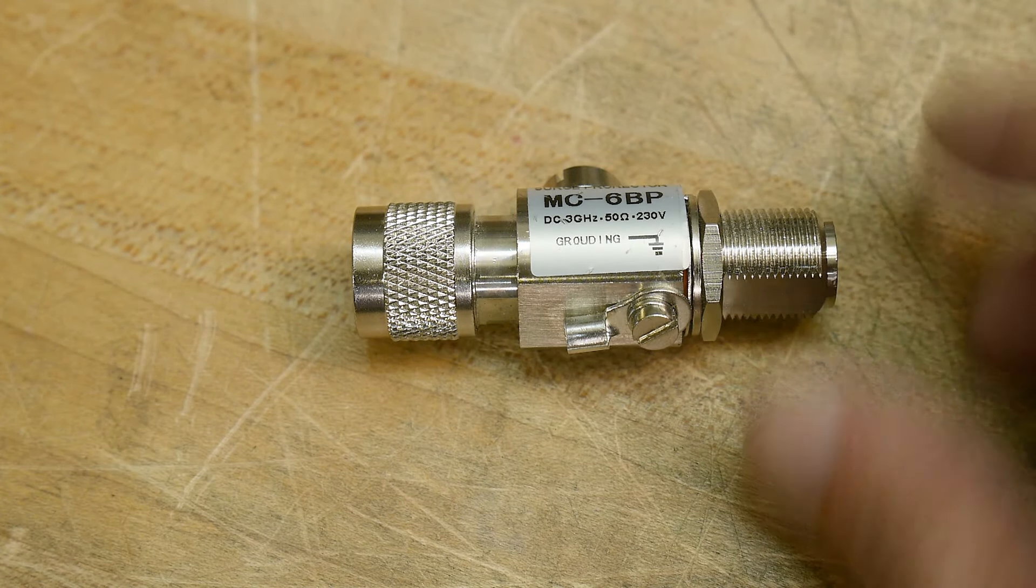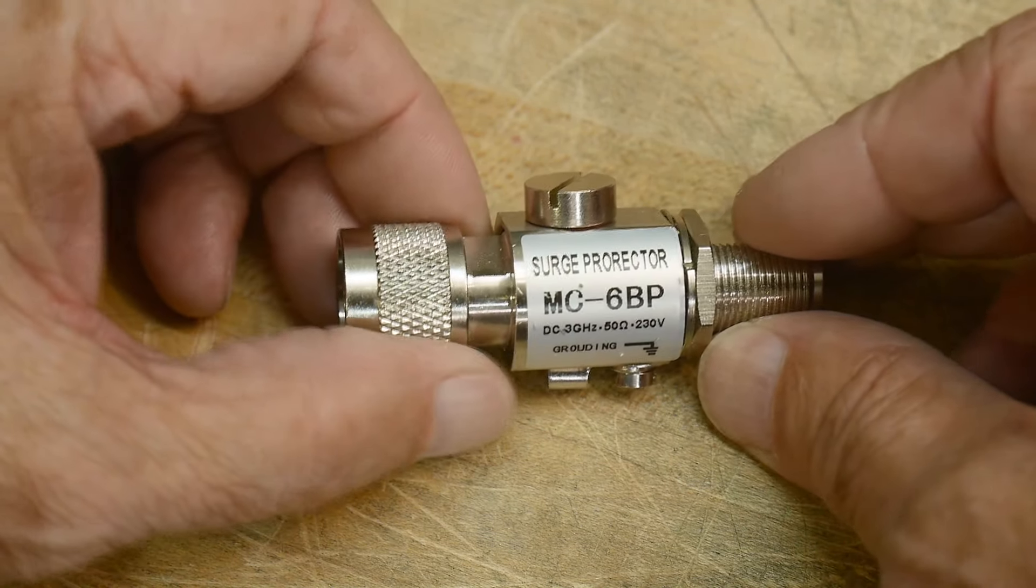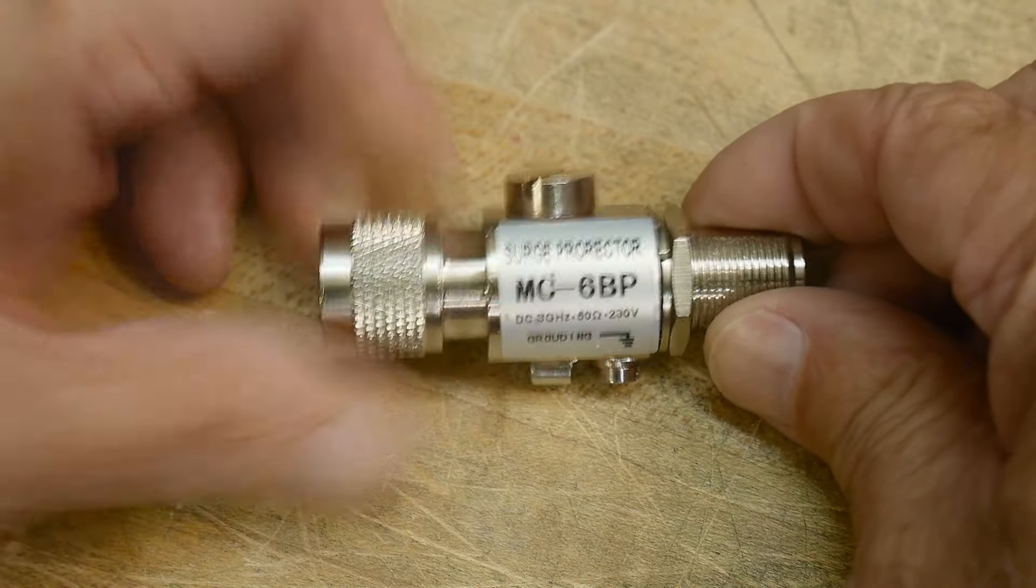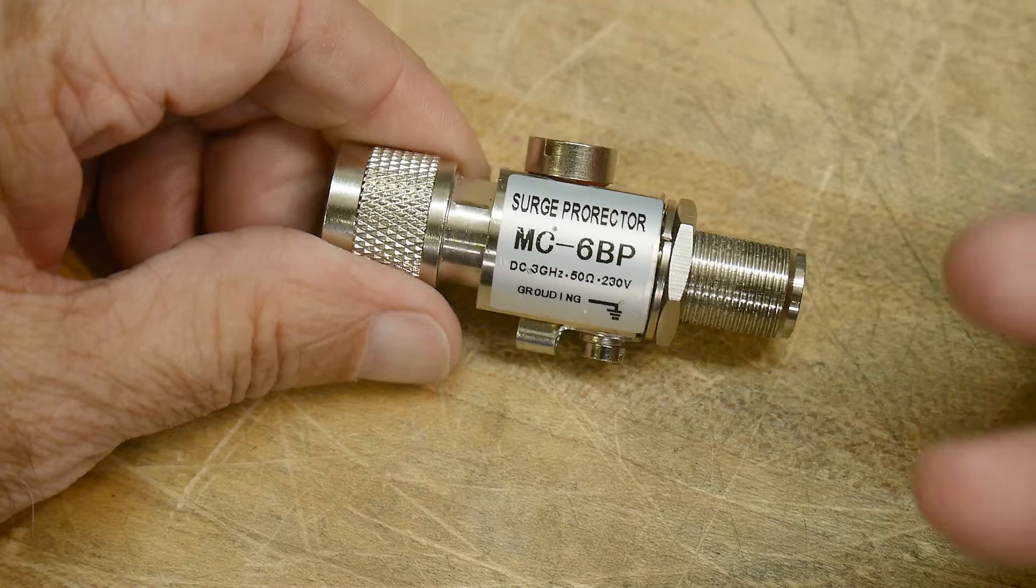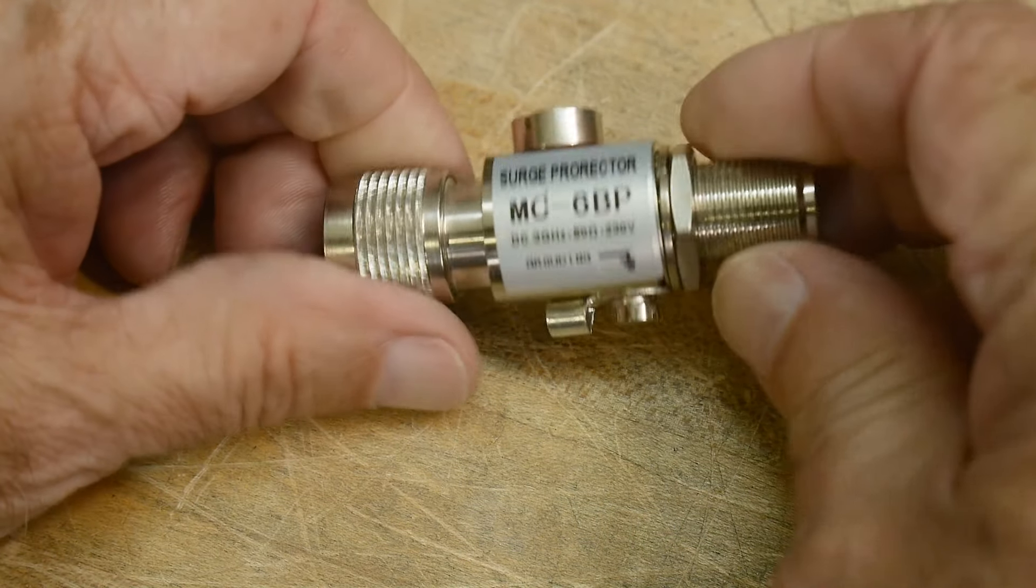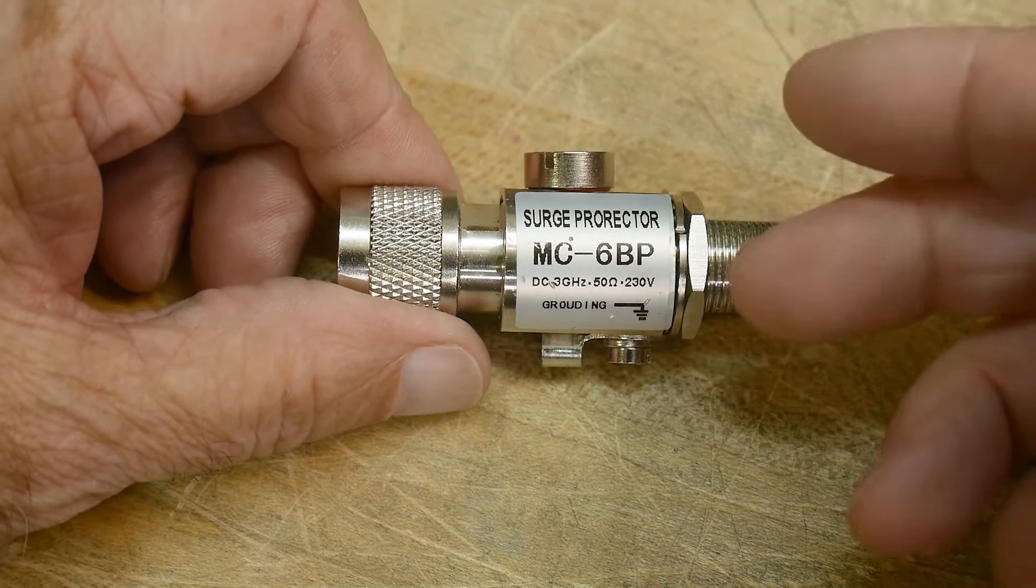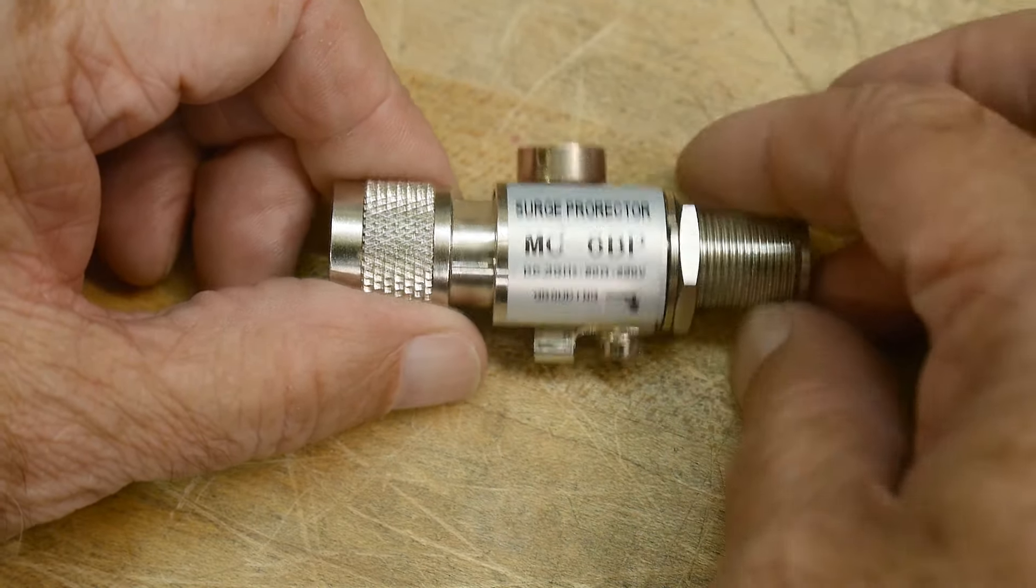All right, what's on the bench today? This is a surge protector, an MC6BP. I bought an antenna once and this came with the antenna. So it is a surge protector, lightning arrestor, whatever you want to call it.